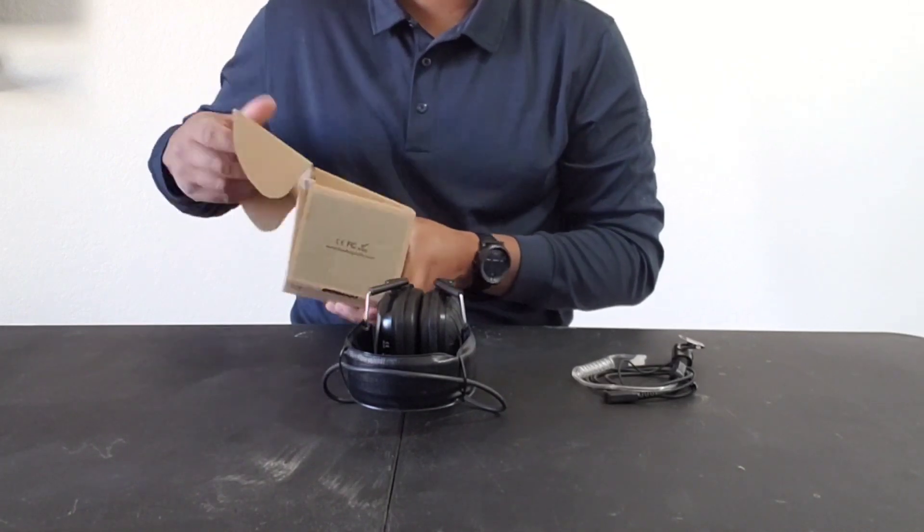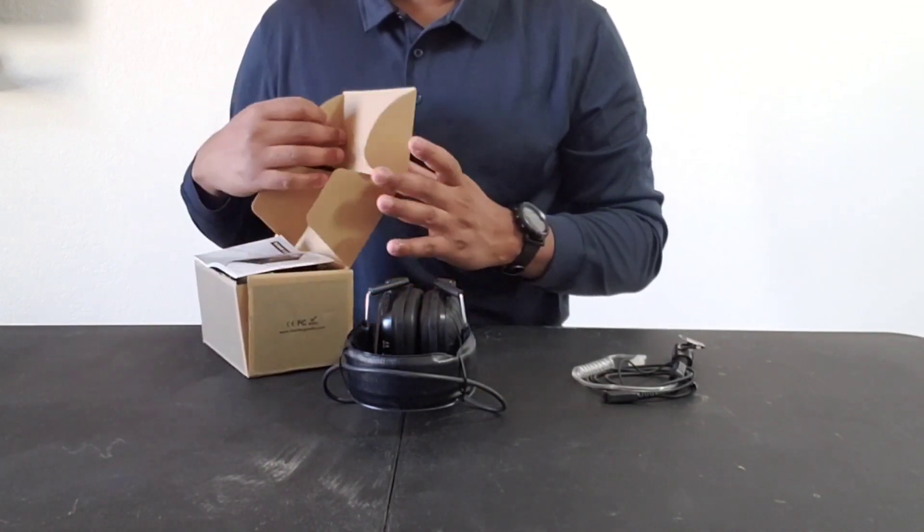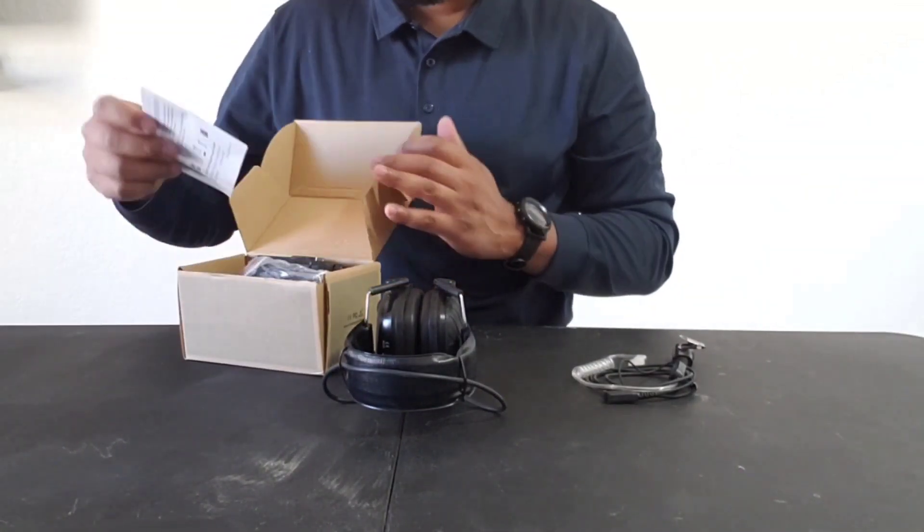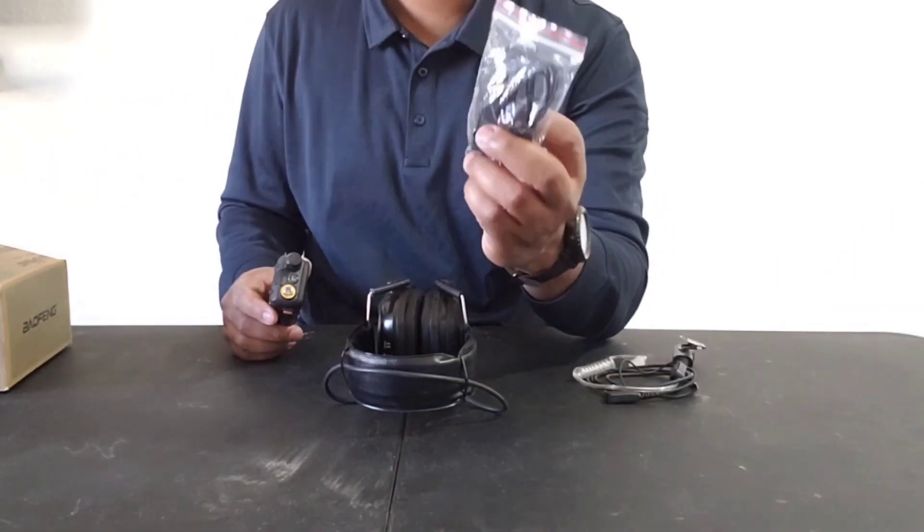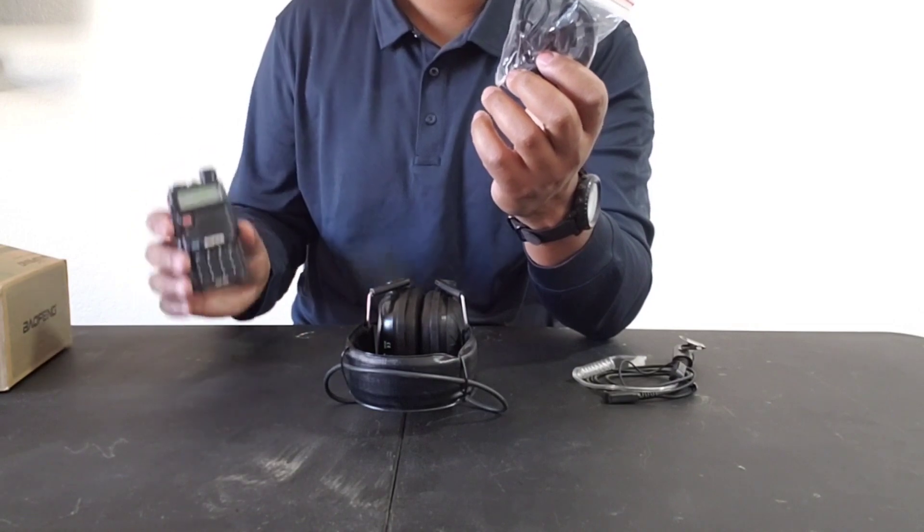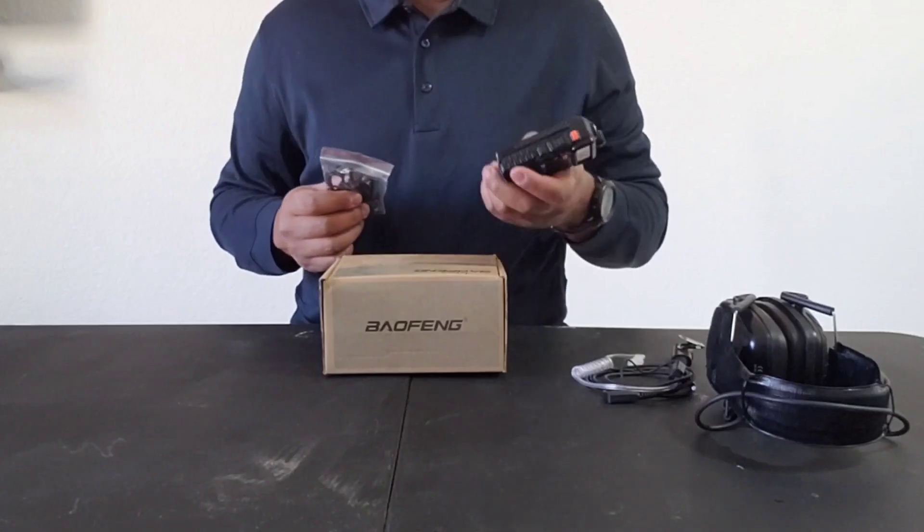And with what comes with it, that's what we're going to start with. All right. So what comes in the box, obviously the charger, the radio, the antenna.